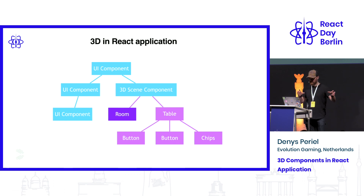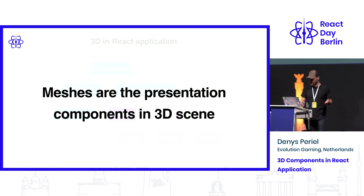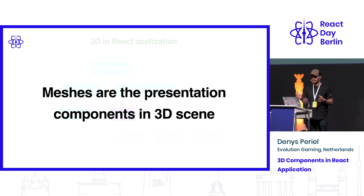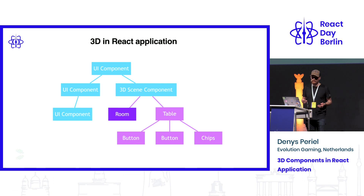We put our room and our table into this 3D scene component. Our buttons are there. But here is the problem: meshes — we can compare them with presentation components. They just render the image on the screen and they don't have any logic. But we want to achieve dispatching an action when we press the button, we want to validate the buttons, and we want to update our chips when the balance is updated.